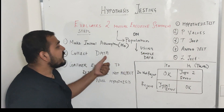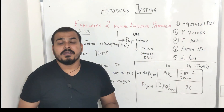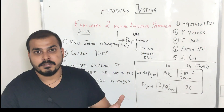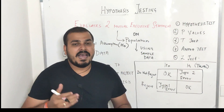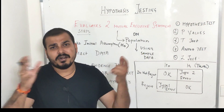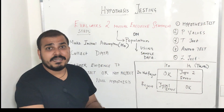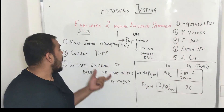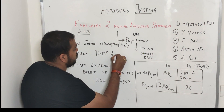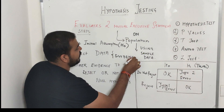Then I will start collecting the data. What is this particular data? This particular data will be nothing but evidences. For the criminal cases, I may take the fingerprints, I may take the DNA prints and a lot of things — to find out whether the defendant is guilty or whether he is innocent. So I will start collecting the data, which is also called as evidences.